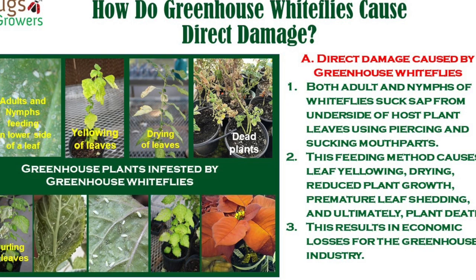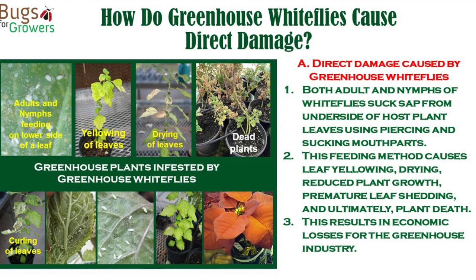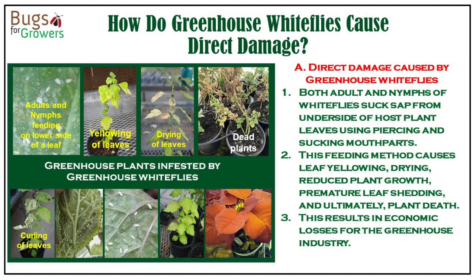Both adults and nymphs of greenhouse whiteflies cause direct feeding damage by sucking sap from the underside of the leaves. Due to heavy feeding, infested leaves turn yellow and curly and dry quickly, and ultimately plants will die.